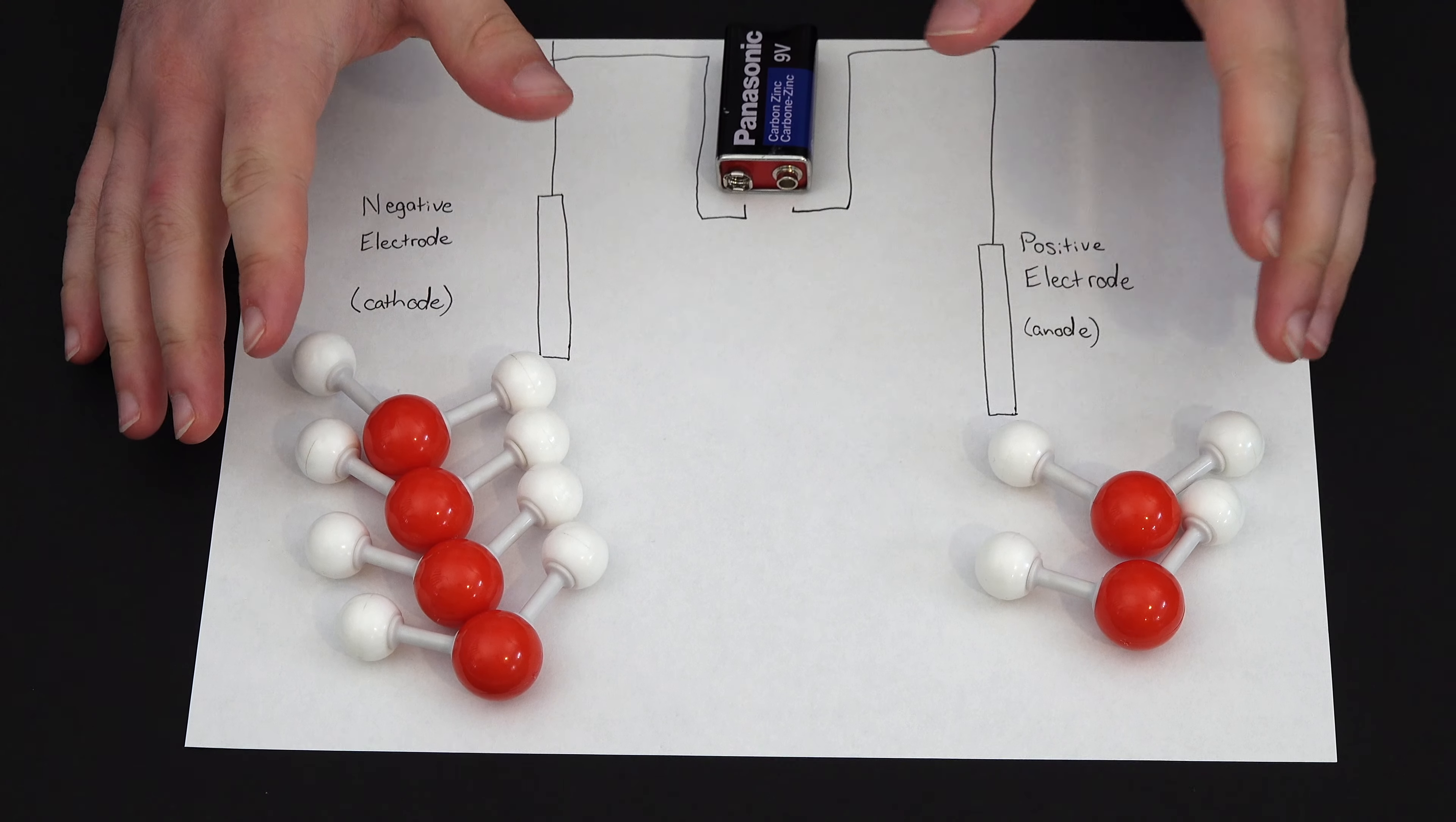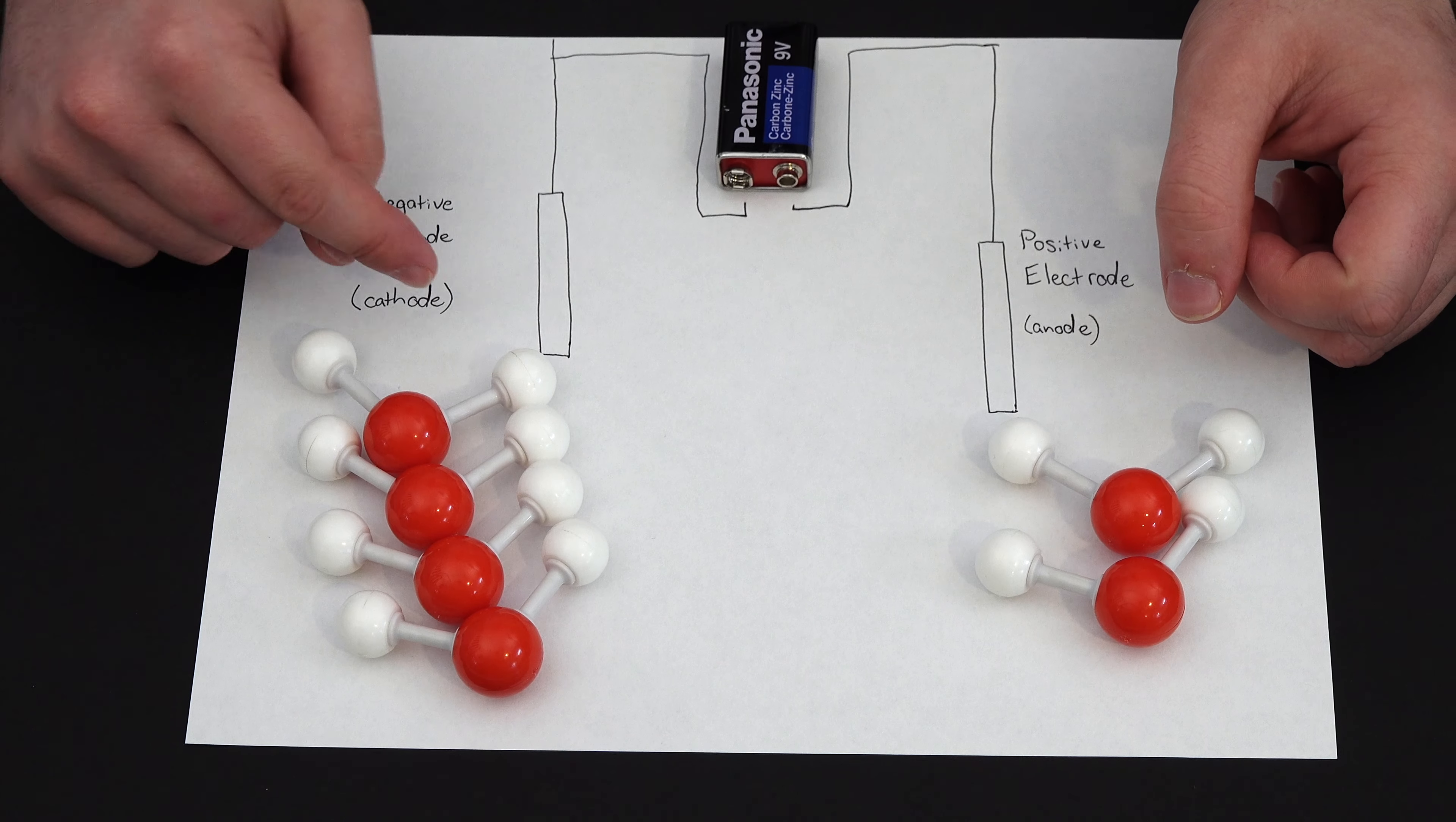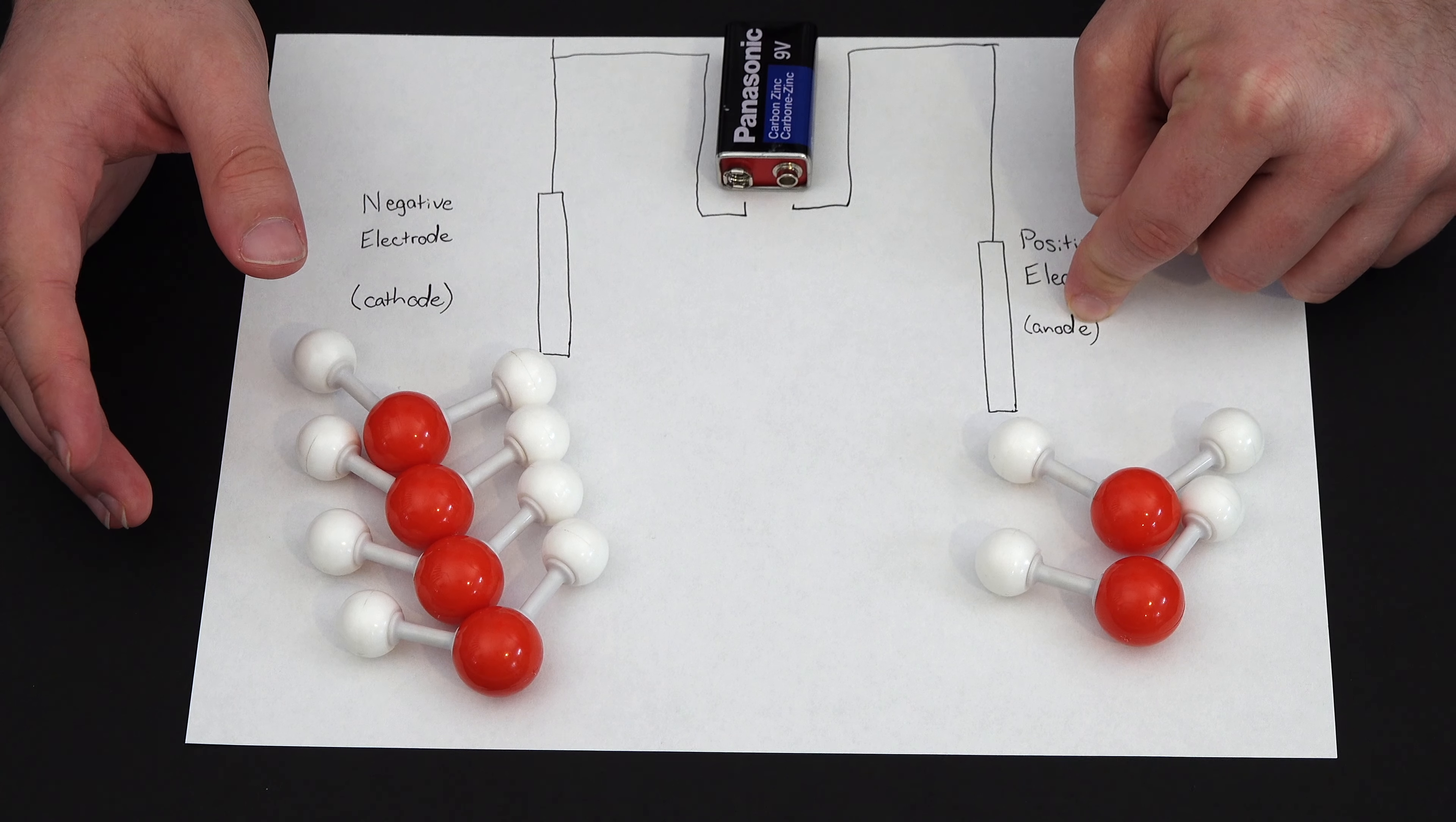So with that we can get into explaining how electrolysis works. So electrolysis works by taking electrons from one side, the positive terminal, and giving electrons to the other side, the negative terminal.